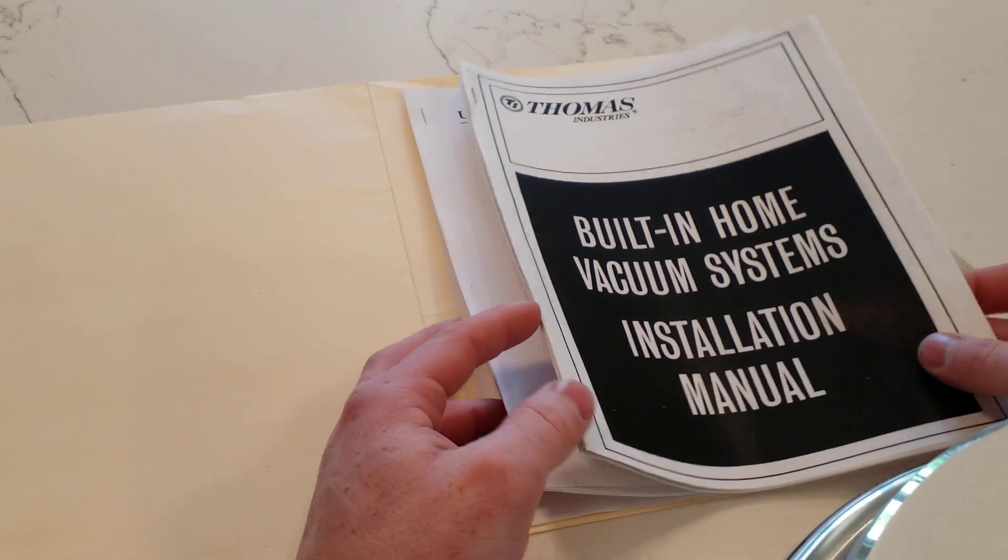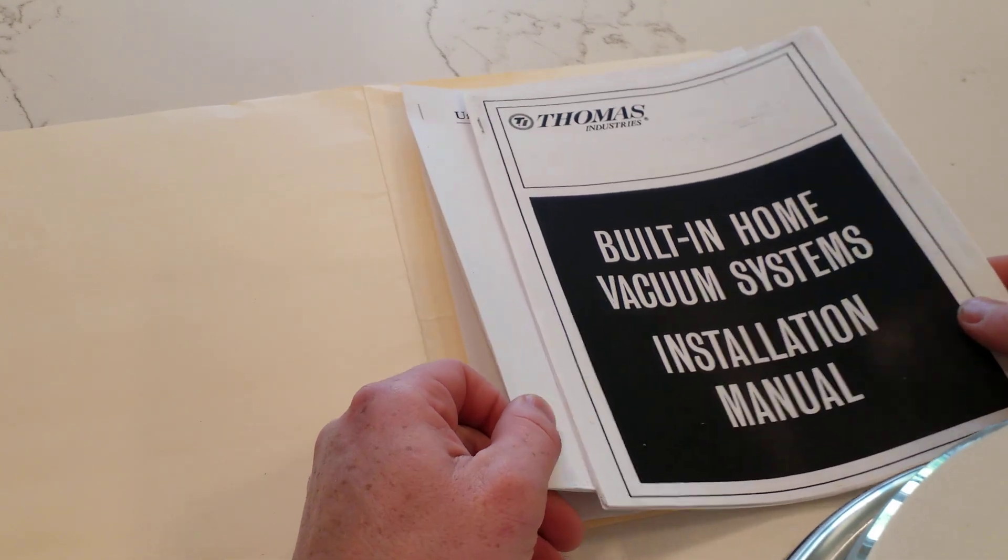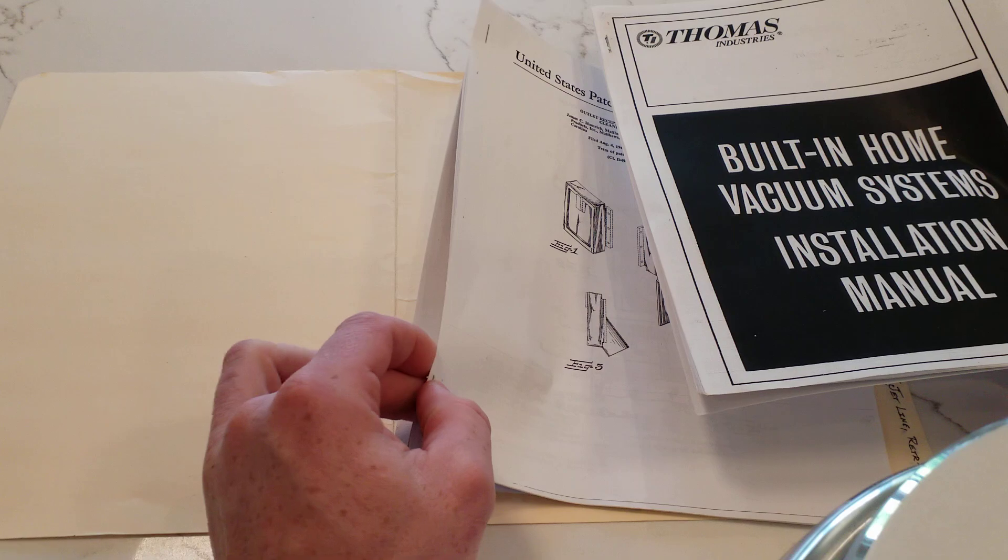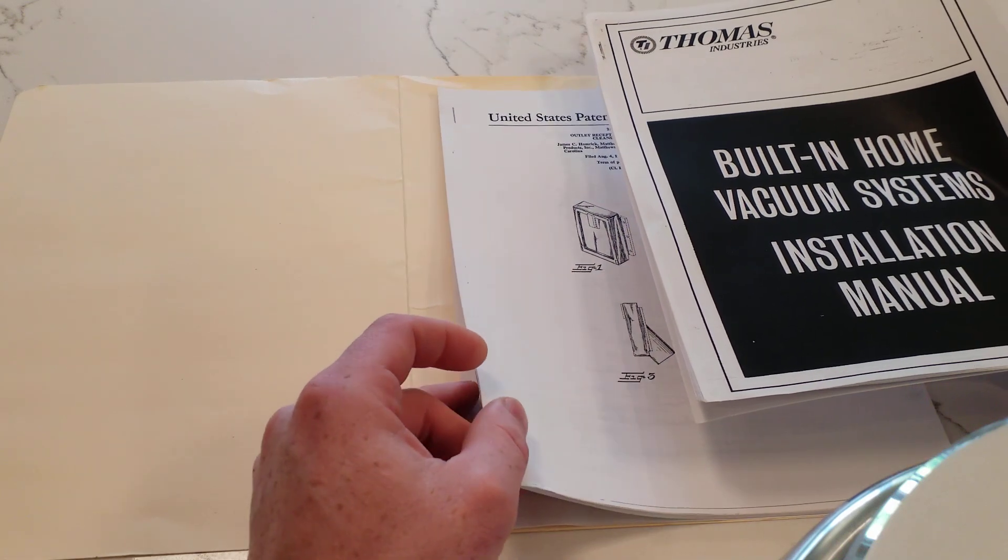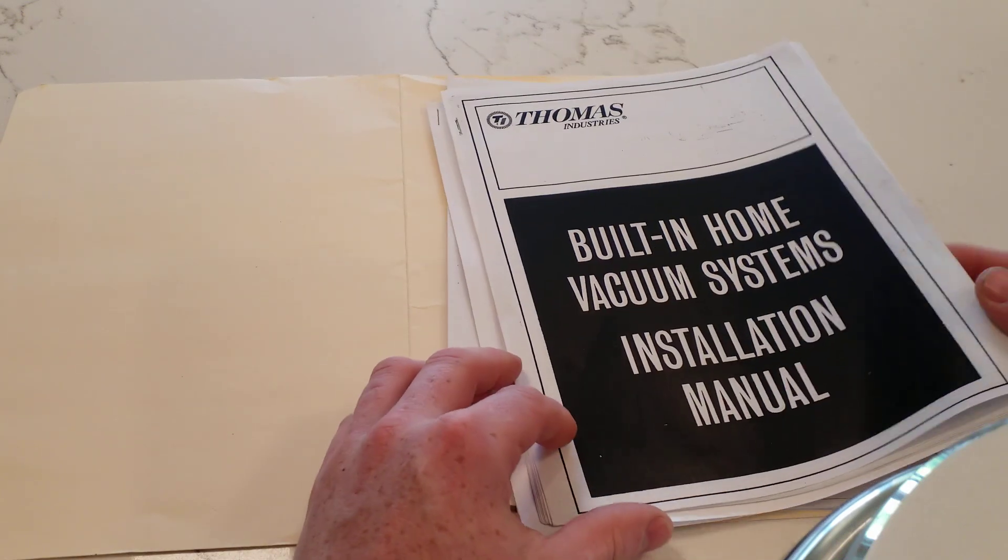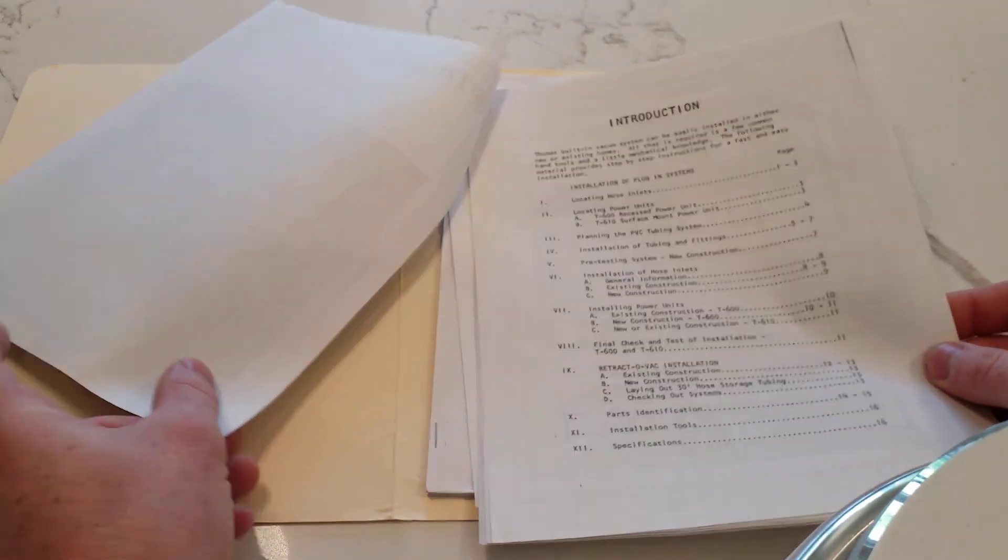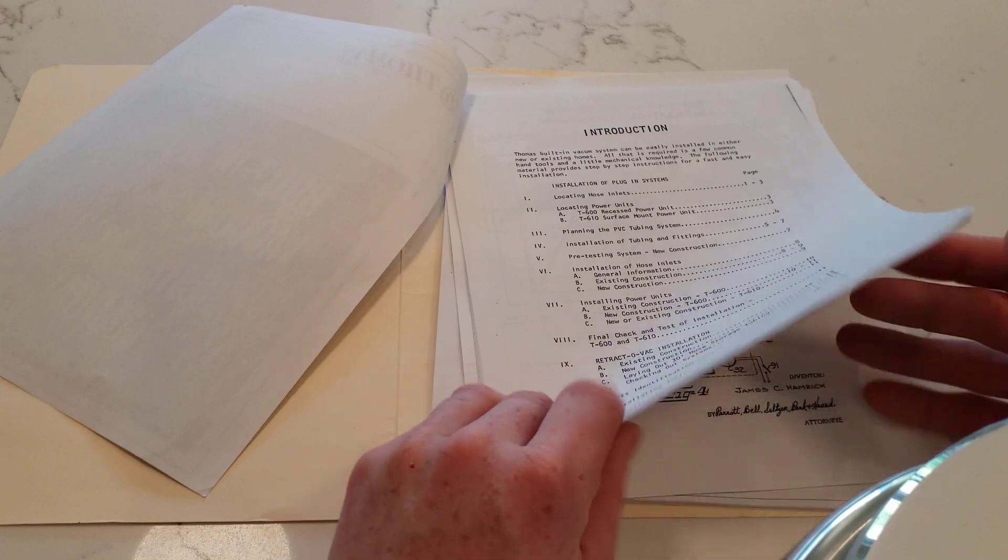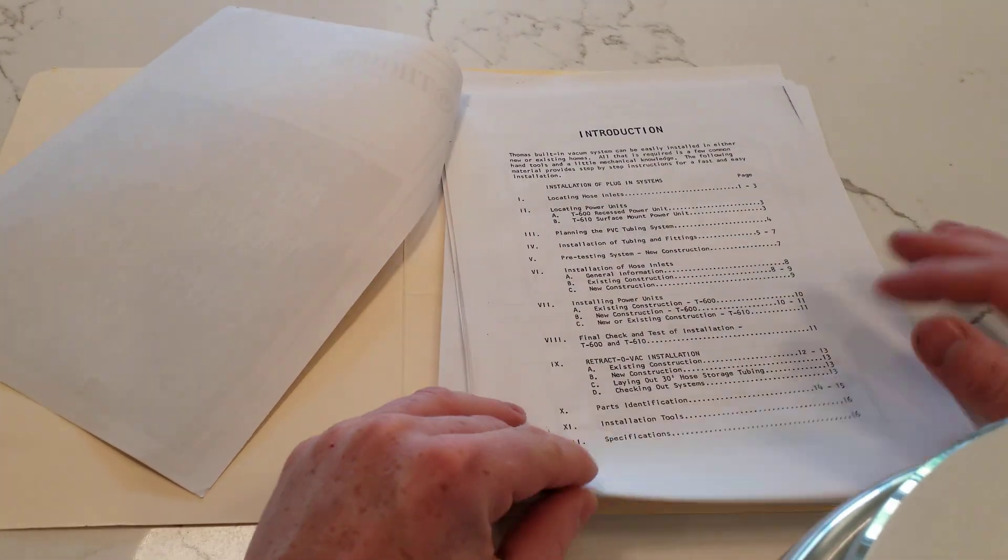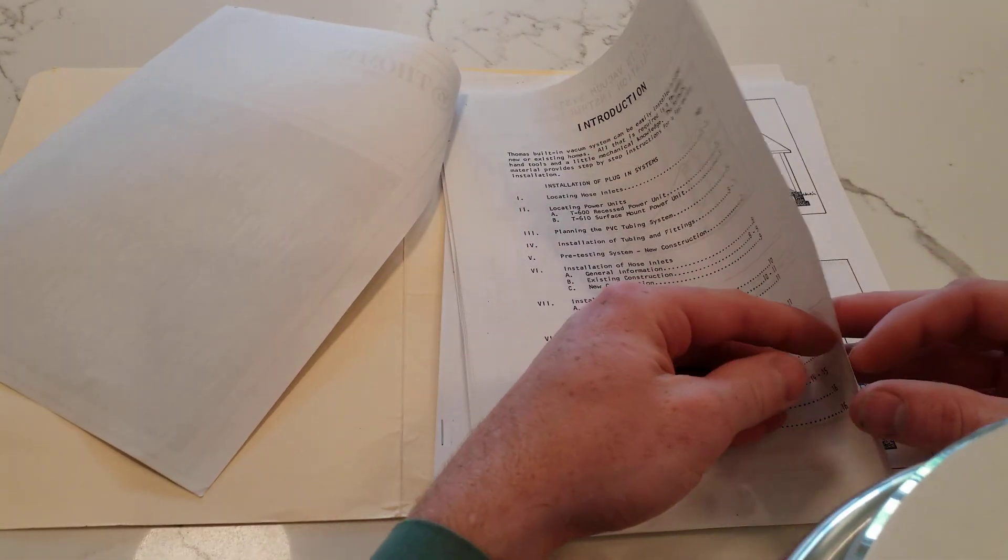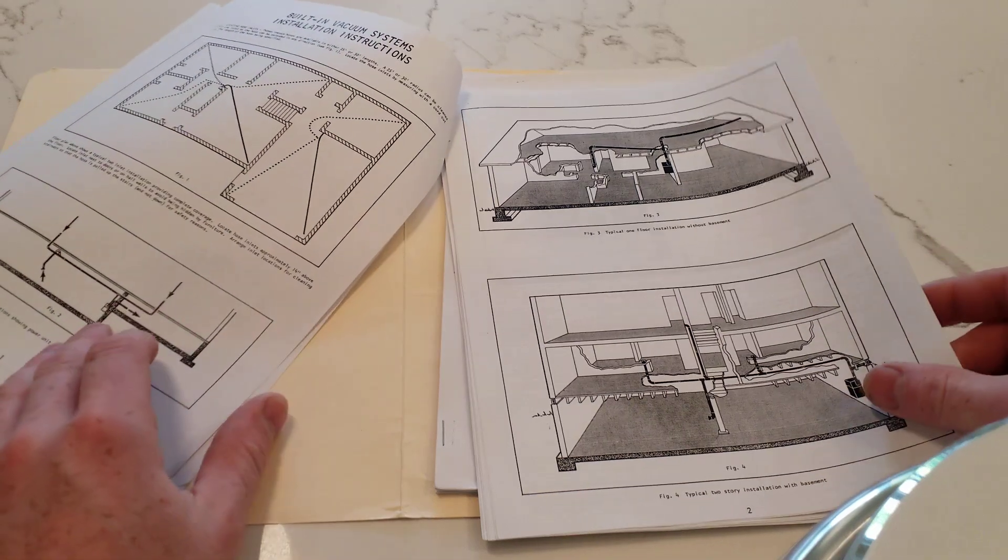Thanks to my contact Bill at VacuLine, who ran his own central vac business in Long Island for years and years, I've come to possession of this installation manual and several of the original patents for the Thomas system from Jetline Industries.